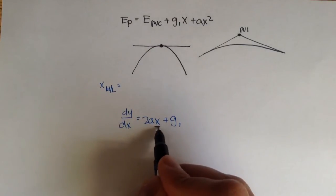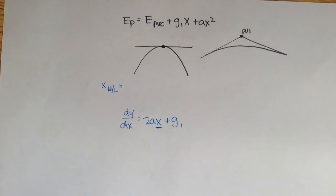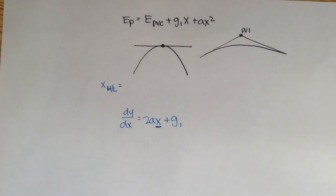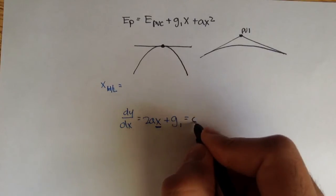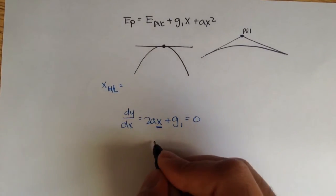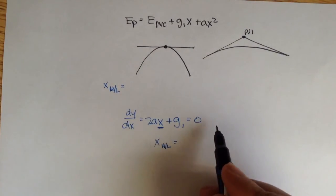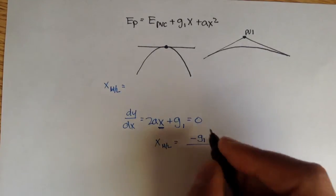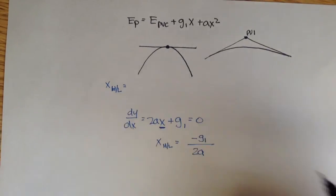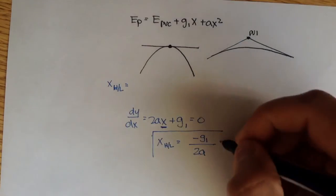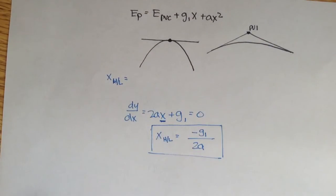In order to find the highest or lowest, or the location of the highest and lowest point x, we need to set the first derivative, or the slope, equal to 0. And so if we simply solve for x high low, move g1 to the other side, that would be negative g1, and then we divide that by 2a. There it is. Simple. That is the equation we use to figure out where the highest or lowest point for a crest or sag curve, respectively, is located.